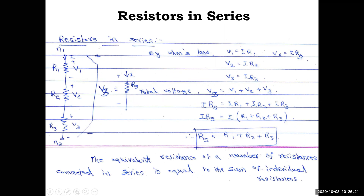Now, resistors in series. We consider three resistors R1, R2, R3 with voltages V1, V2, V3 across them. The current through all three is the same value I, from the property of series connection. Students often make mistakes here, so pay careful attention as this is required for further calculations in network theory.